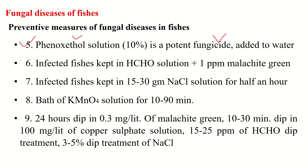Infected fishes may also be kept in a bath containing 0.5 ml of potassium permanganate solution in 1000 ml of water. We can also use 1 ppm of malachite green to control fungal diseases. Infected fishes can also be kept in 15 to 30 gram NaCl solution for half an hour.